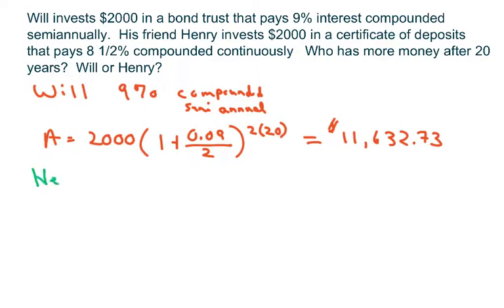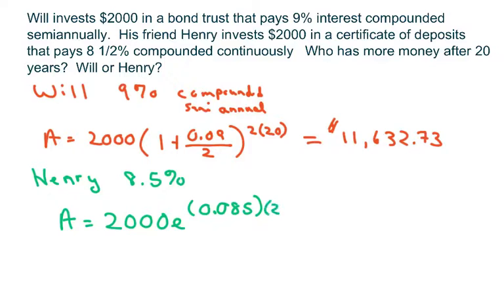Henry, on the other hand, he has 8.5% compounded continuously. So, we're going to use that formula with the P, so 2,000, E, and it's 0.085 and 20 years. And that gives you $10,947.89. So, Will has more money after 20 years, so Will wins.